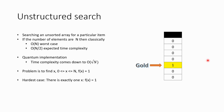So what Grover's algorithm is trying to do is, if we are trying to do this in a quantum computer with a quantum implementation, can we make the time complexity better? And Grover's algorithm says that the time complexity comes down to order of root n. That is what we are going to see today.